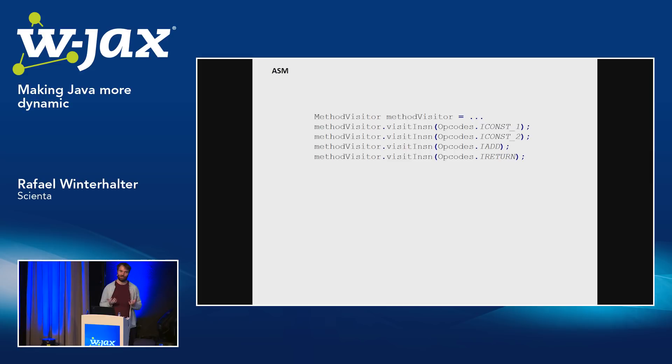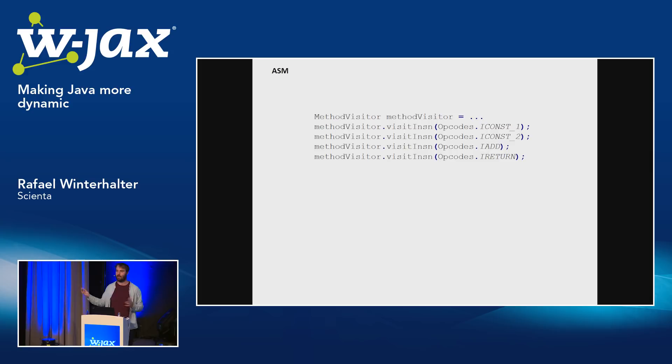So how can you generate bytecode? We have established that a class file is basically just a byte array where all the things are at specific points. Knowing that, you can find the offset where the method code is and extend this segment to contain more bytes. Considering the security check from the beginning of the talk, all you need to do is figure out what the bytecode is for the if-throw statement, put it in the beginning of the method, and then retain the original bytecode right after. In practice, this is what code generation does — that's what ByteBuddy does, what CGLib does, what Javassist does.